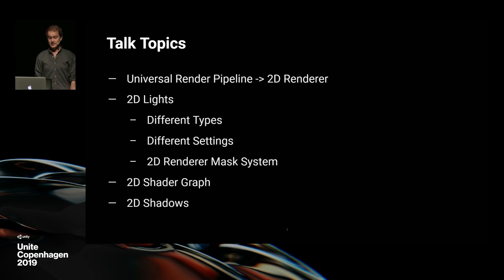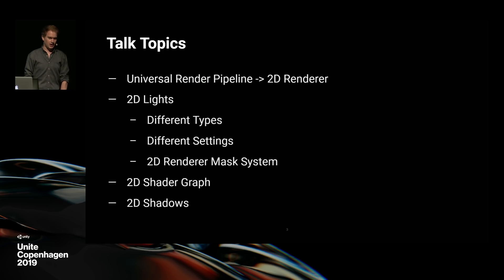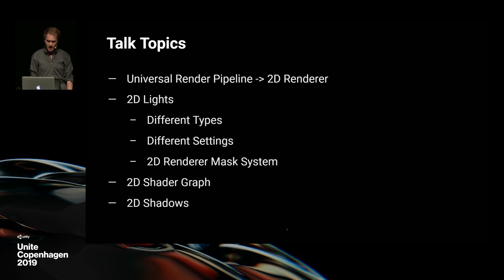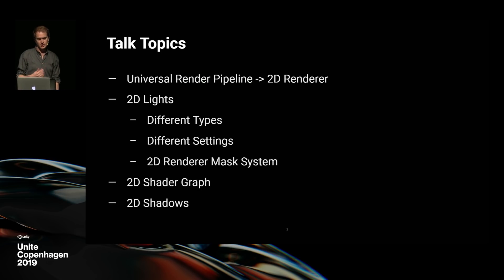The main key things I'm going to cover: the first one is the Universal Render Pipeline, which has been rebranded from the Lightweight Render Pipeline, and now has a 2D renderer. That's dedicated to making purely 2D games. You can render some 3D stuff in there, but it's pretty much built so we can make very nice, performant 2D features which fit sprite workflows the most.